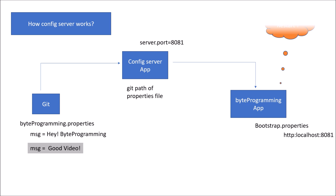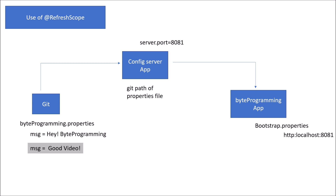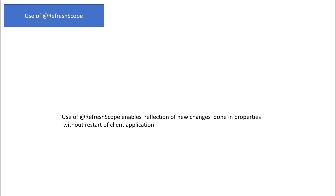So do we need to restart the application? Possibly, if you are not going for a mature config server model. If you don't want to restart your application every time you make changes to the external configuration file, you need to use @RefreshScope. Put this annotation on top of the class containing your REST endpoints, then call the /actuator/refresh endpoint via a REST call to make the annotation work. This enables reflection of new changes in properties without restarting the client application.